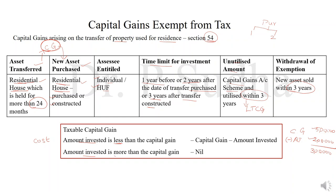On the other side, if the amount invested is more — for example, the capital gain is 5 lakhs and the amount invested is 6 lakhs — since the amount invested is more than the capital gain, the taxable capital gain will be nil. So, if the amount is less, we will deduct it from the capital gain. If the amount invested is more, then there will be no taxable capital gain at all.